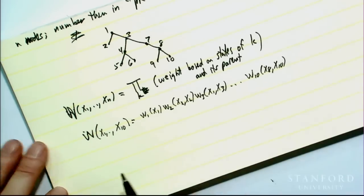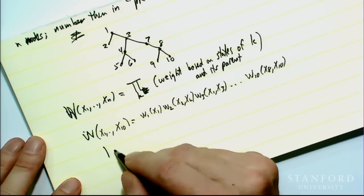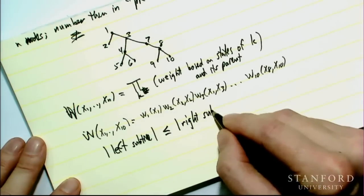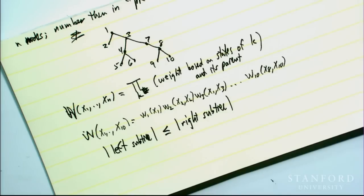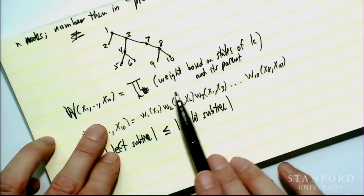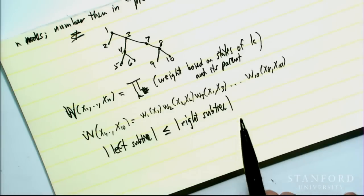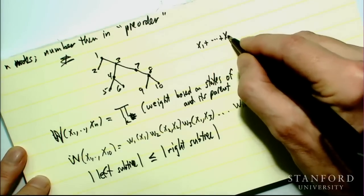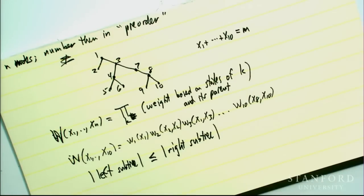I'll assume without any loss of generality that the size of the left subtree is less than or equal to the size of the right subtree at every node of the tree. If not, I could swap them and renumber in preorder. This is going to make the algorithm work better, and I've already done this in the example. Now the idea is to calculate the sum over all X1 through X10 that satisfy the function — here, X1 plus the sum of all variables equals M, some given number of one-bits among the ten variables.